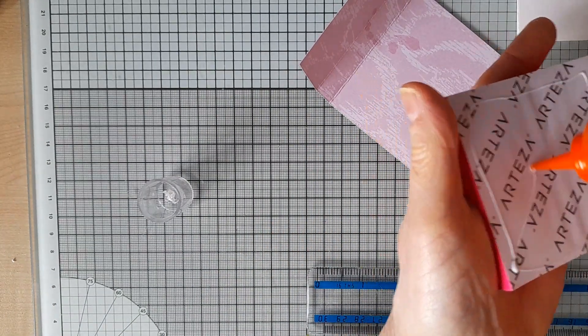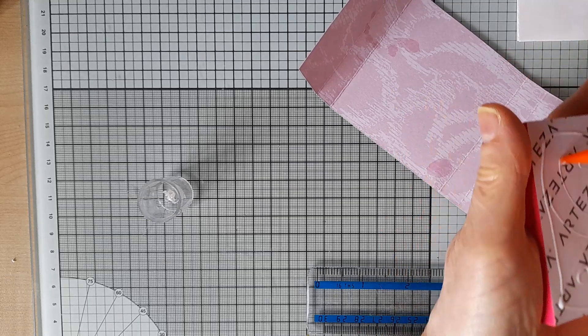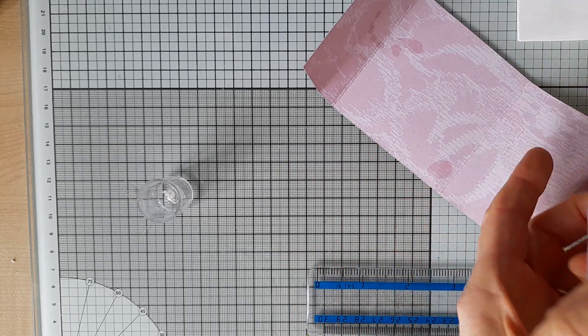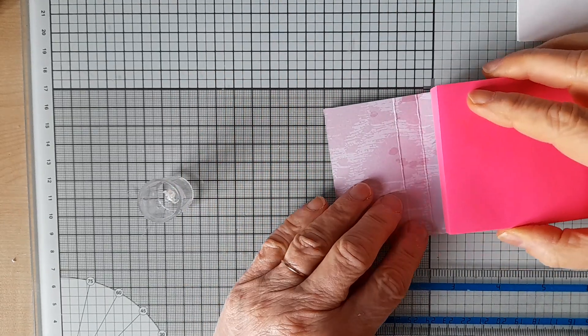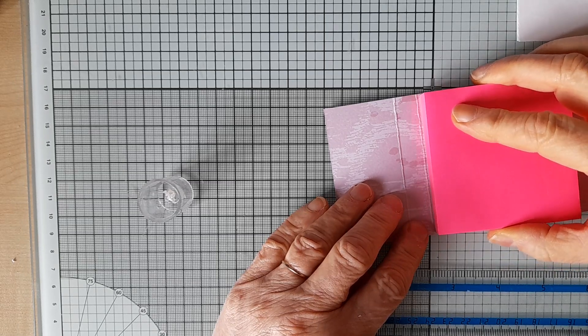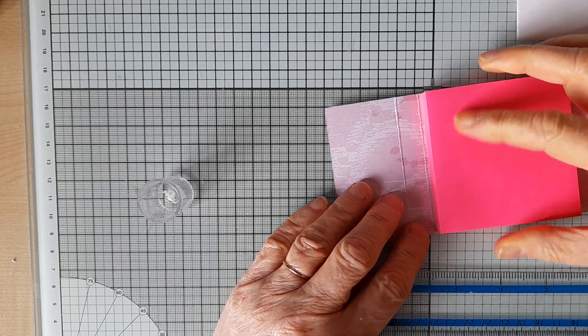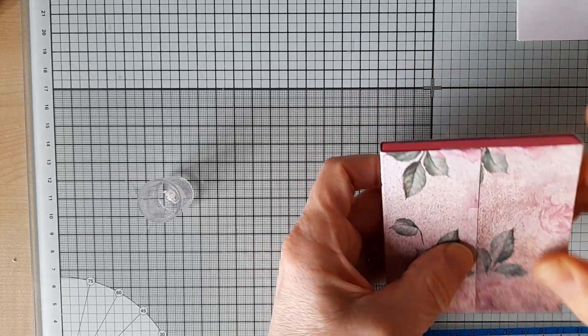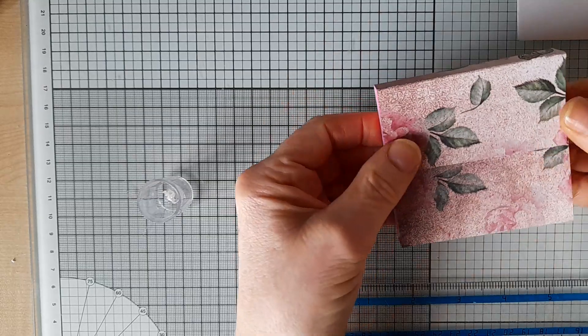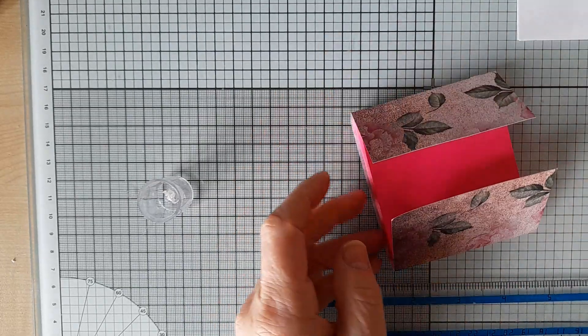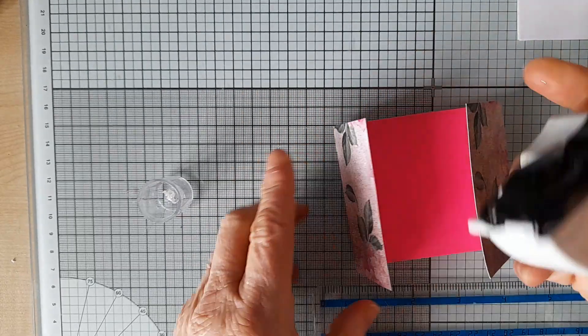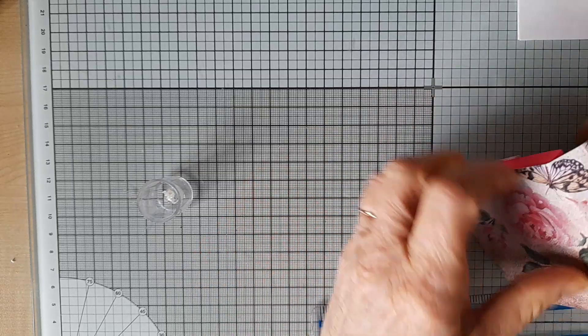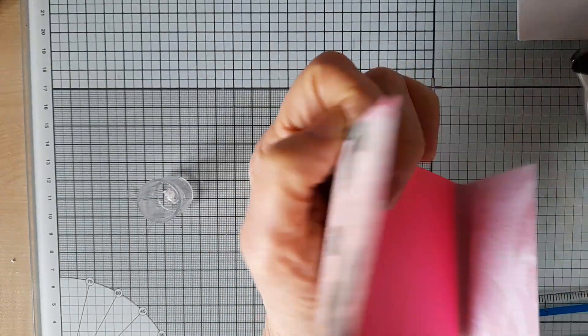So I've got my post-it notepad here, so all I do is stick this into here, lining it up more or less with the score line on either side. So then you see that folds it over nicely and gives me my little book.